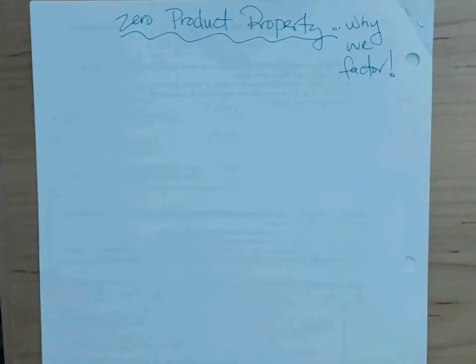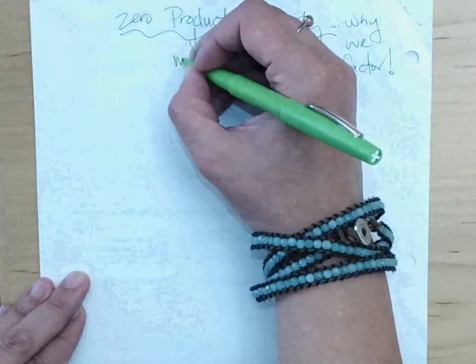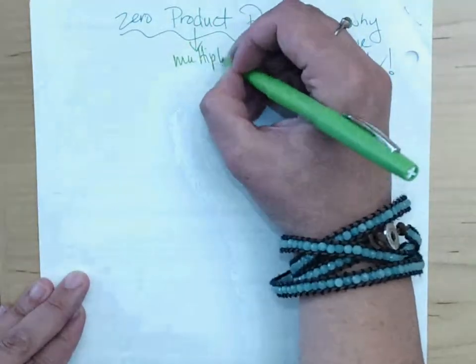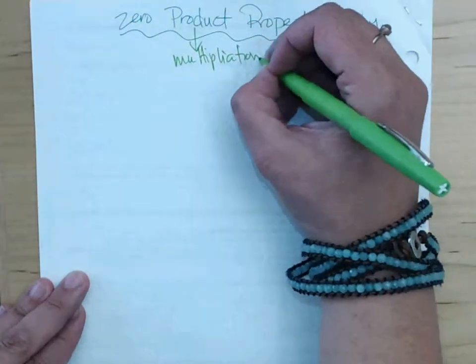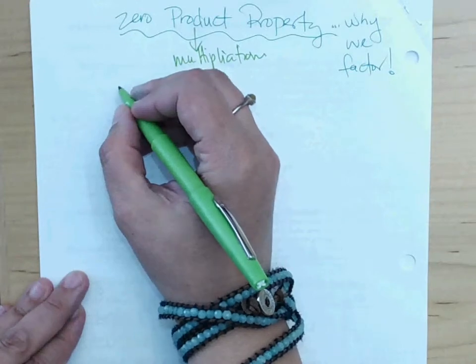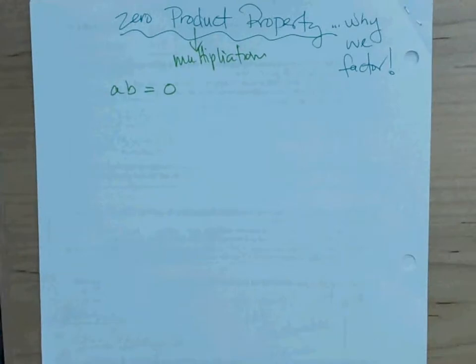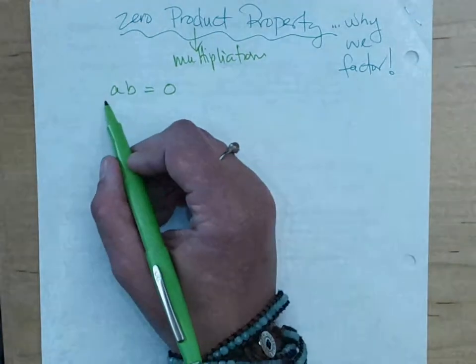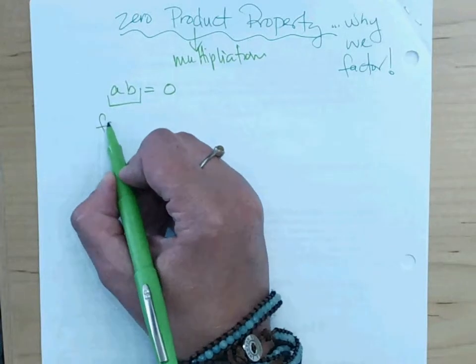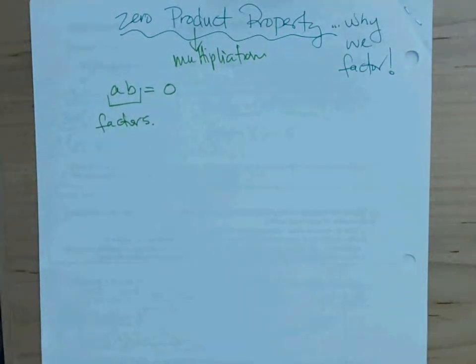Zero product. What does the word product mean? Yeah, multiplication. So what do you know about zero? Anything times zero is zero. So if I told you that two numbers multiply together to give you zero, each one of these numbers are called factors. When you multiply two numbers together, they're called factors. Yeah, two factors make a product.